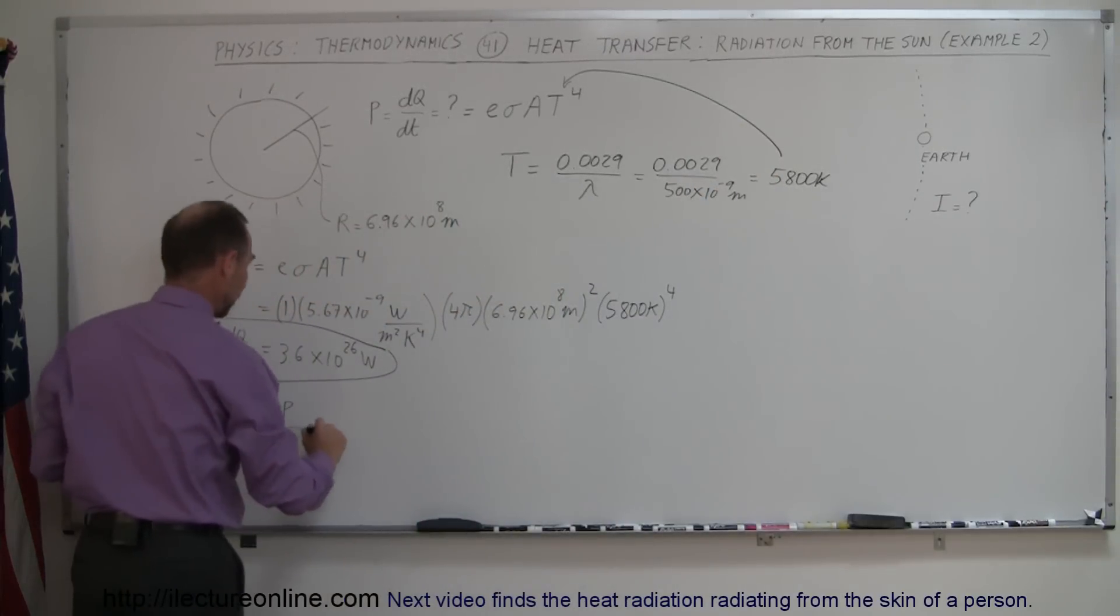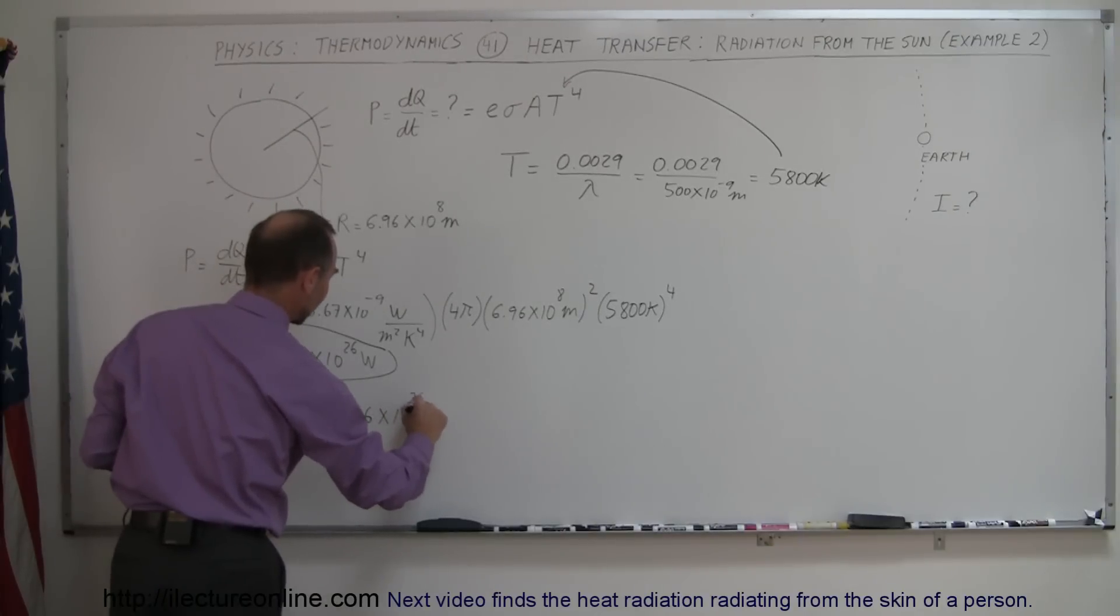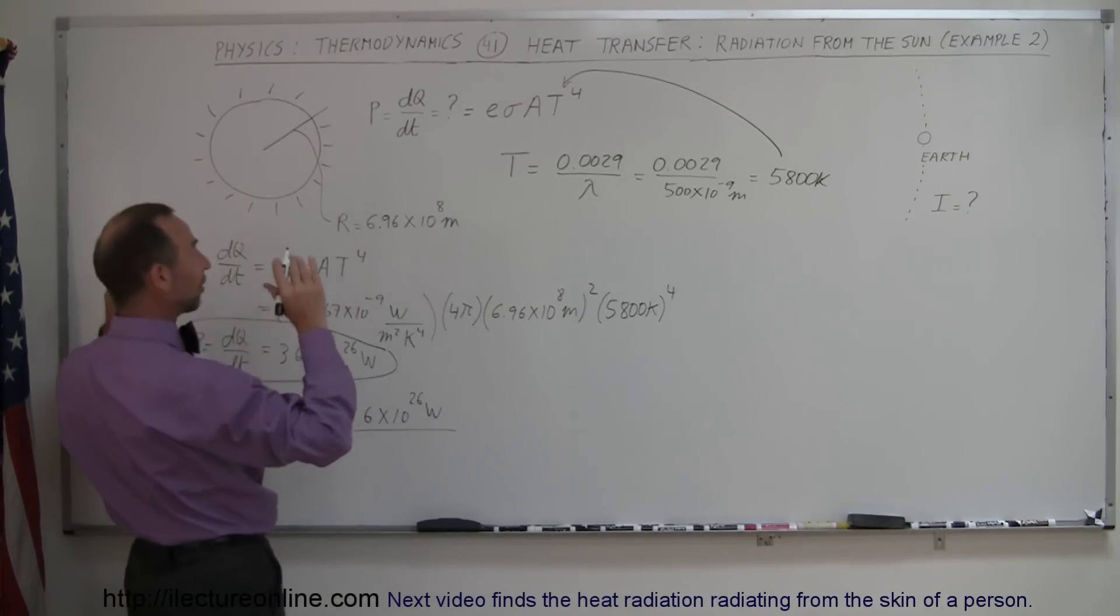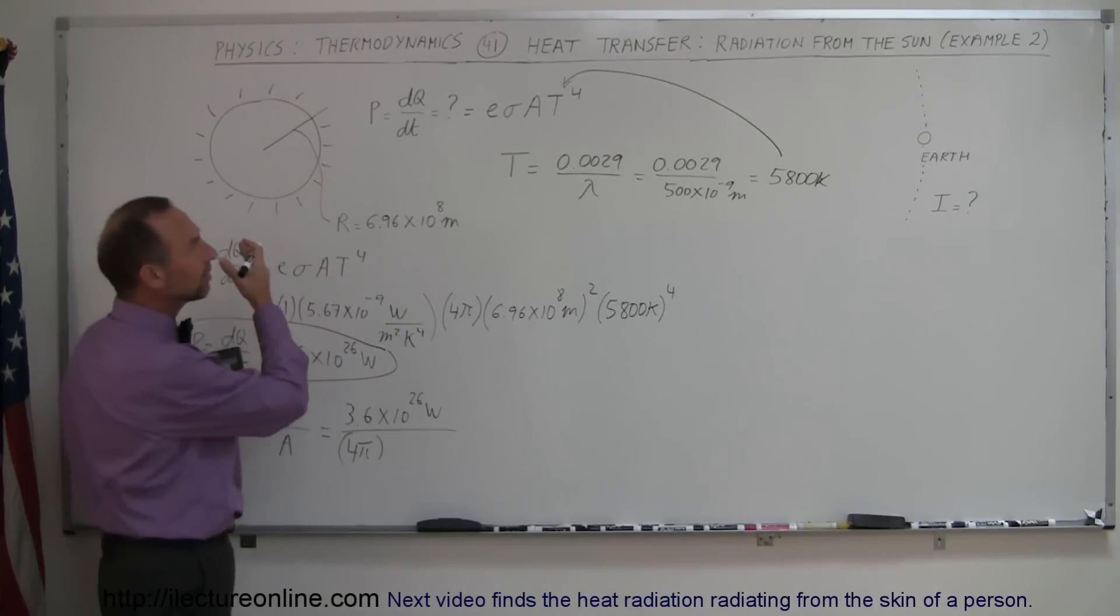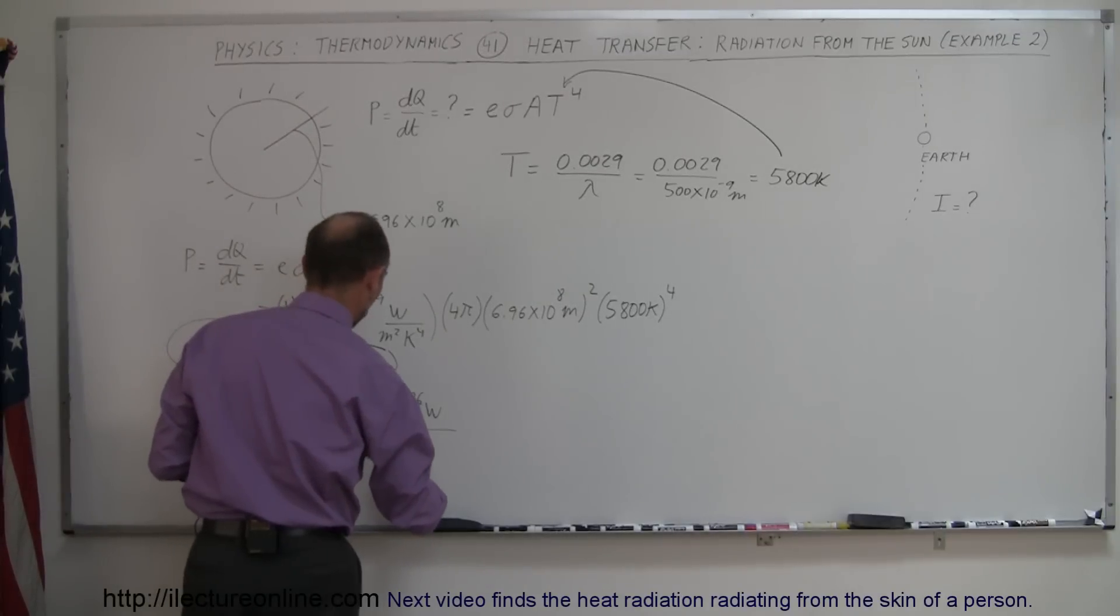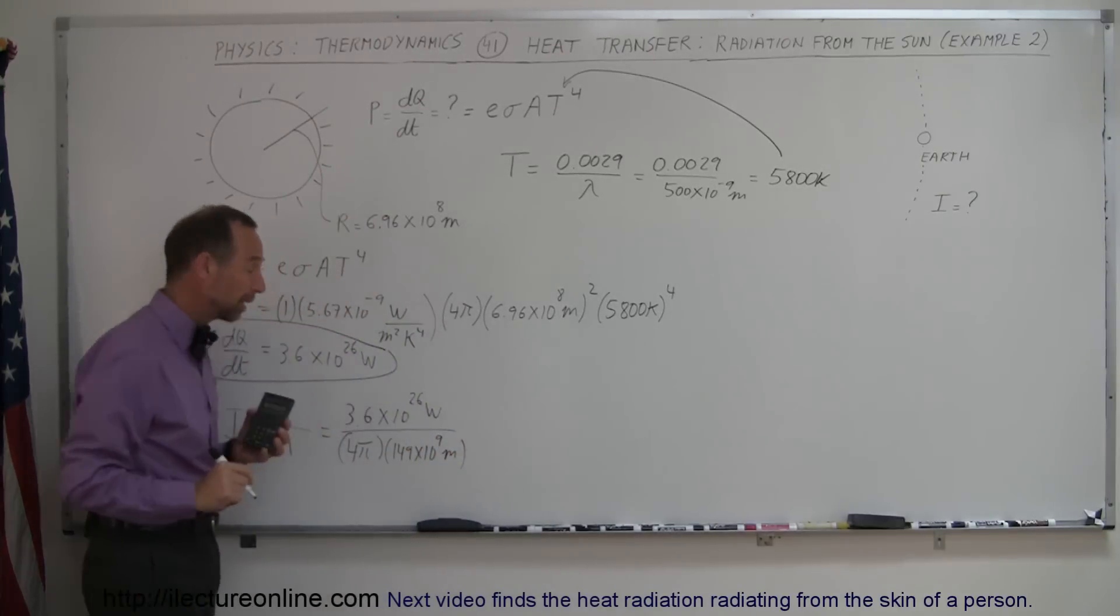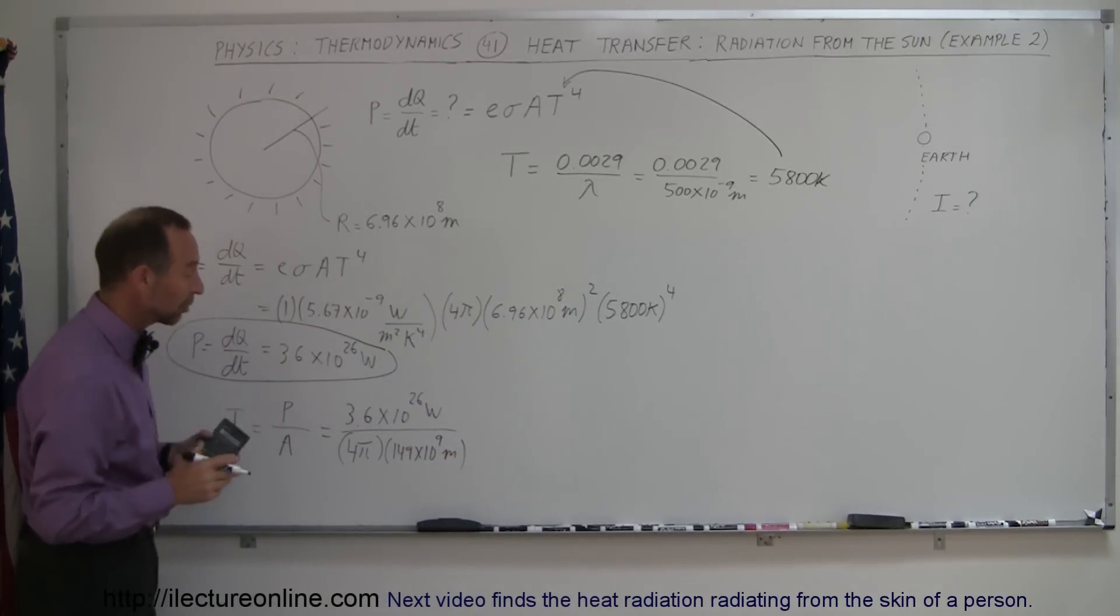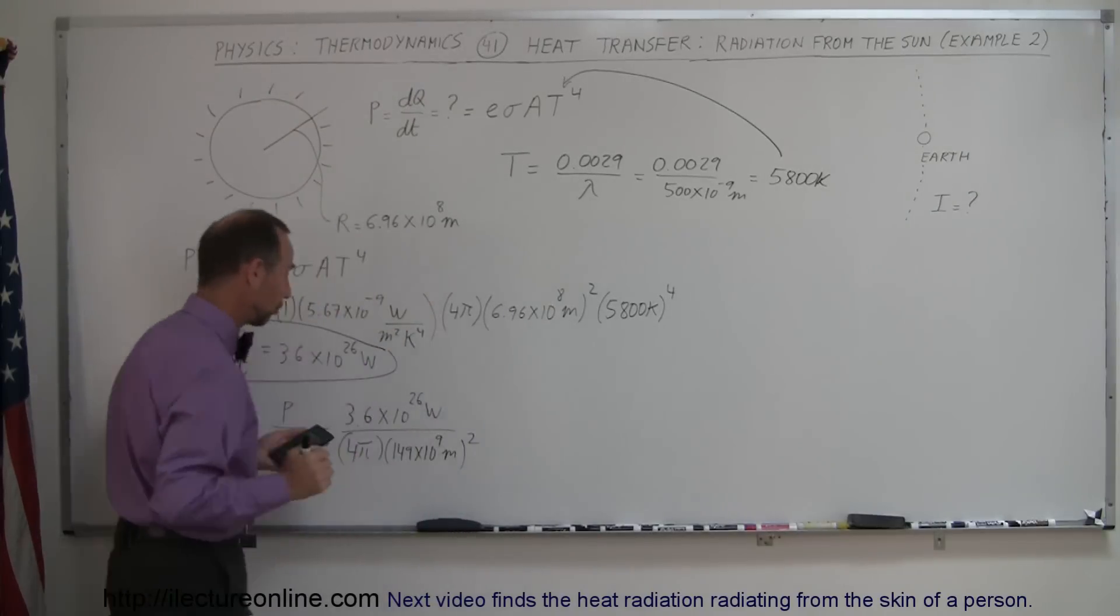So, in that respect, we say it's equal to the power output, 3.6 times 10 to the 26th watts. And we divide that by the surface area over which the sunlight spread, which is 4 pi, times the radius. And the radius, then, would be the distance to the Earth. And the distance to the Earth, let's say it's 149,000,000 kilometers or 149 times 10 to the 9th meters. That would make it 10 to the 9th is billion. So, 149,000,000 kilometers is 149,000,000,000 meters. Of course, we have to square that because it's the radius squared.